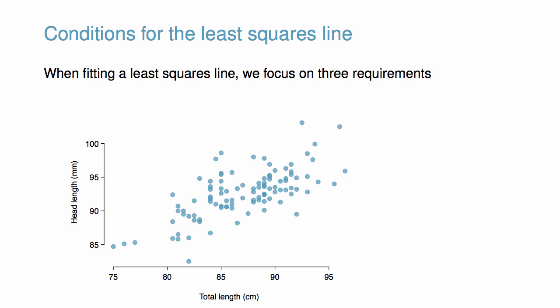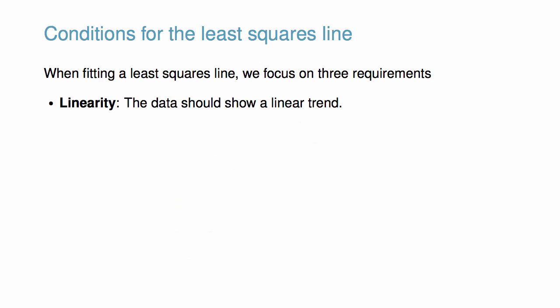It is important to keep in mind the assumptions for linear regression. When fitting a least squares line, we focus on three requirements. First, the data should show a linear trend. If there is a non-linear trend, an advanced regression method from another book or later course should be applied.